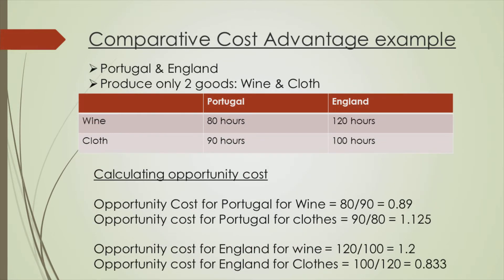Let's understand this with the help of an example. Suppose there are only two countries in the world — Portugal and England — and they produce only two goods: wine and cloth. Portugal takes 80 hours to produce one unit of wine and 90 hours to produce one unit of cloth.